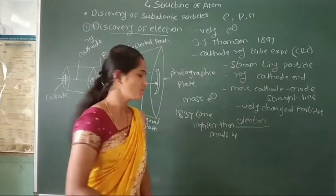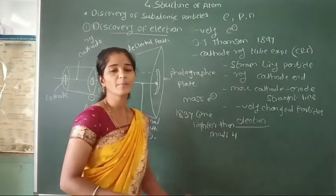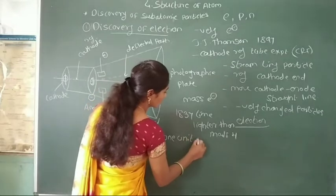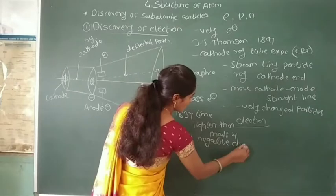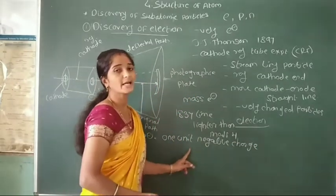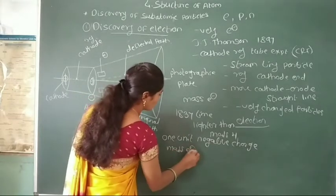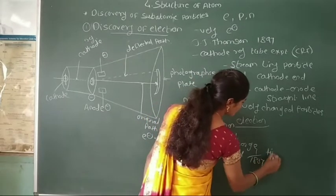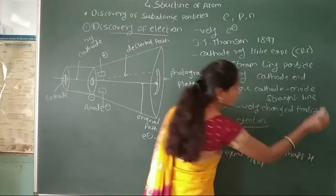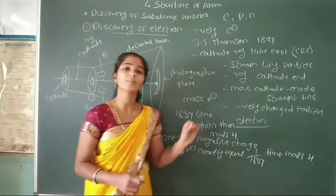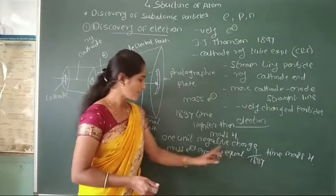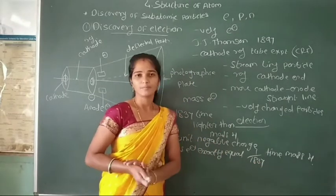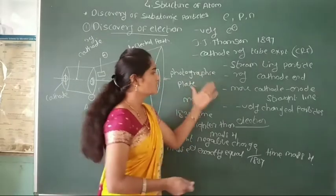Now we see the actual definition of an electron. The electron is a fundamental particle of an atom which carries 1 unit negative charge, and the mass of this electron is exactly equal to 1 by 1837 times the mass of hydrogen. This is the first fundamental particle — the electron — and its discovery.